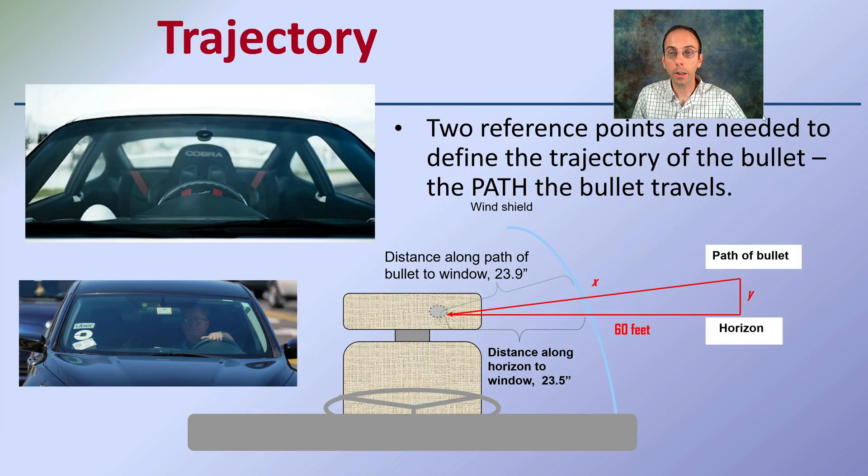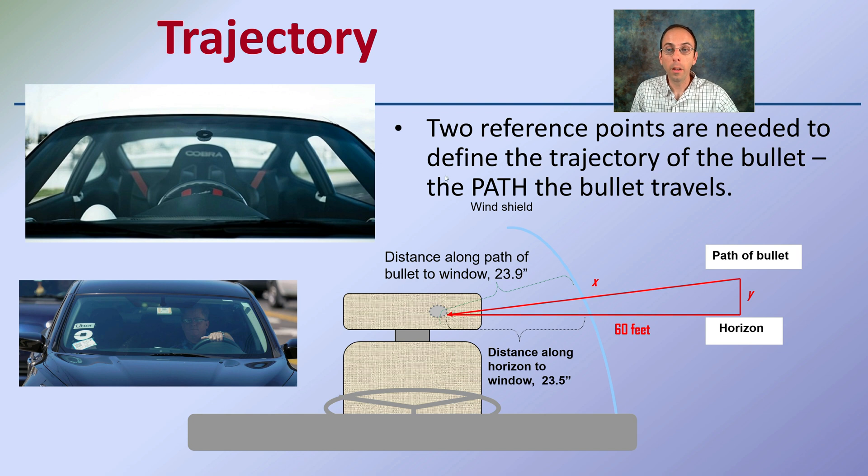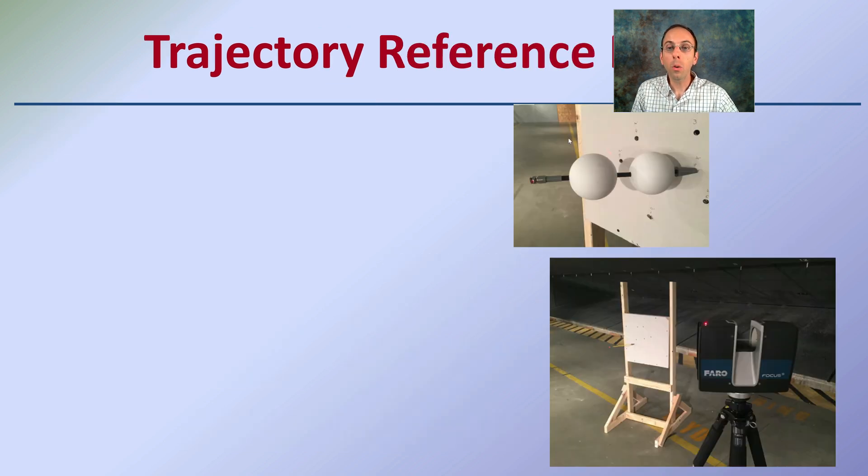Now getting into trajectory, two reference points are needed to define the trajectory of a bullet, the path the bullet travels. Here we're going to be looking at the impact of a bullet with a passenger or driver, in this case of a car, coming through the windshield and impacting here. So as I said, two reference points are needed.